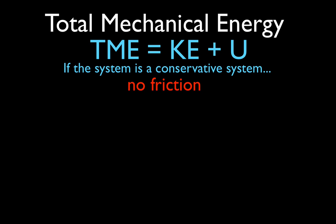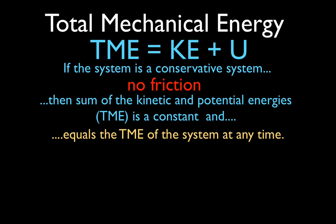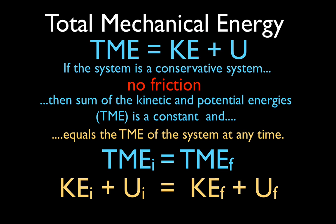So in a conservative system there's no friction. If we say the system is a conservative system, then the sum of the kinetic and the potential energies — the total mechanical energy — is a constant and equals the total mechanical energy of the system at any time. We can say that the initial energy equals the final energy: conservation of energy. We expand that to say the initial kinetic energy plus the initial potential energy equals the final kinetic energy plus the final potential energy. This is valid only if we have conservation of energy, meaning a conservative system with no friction.